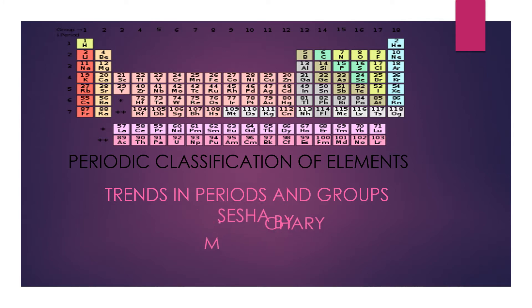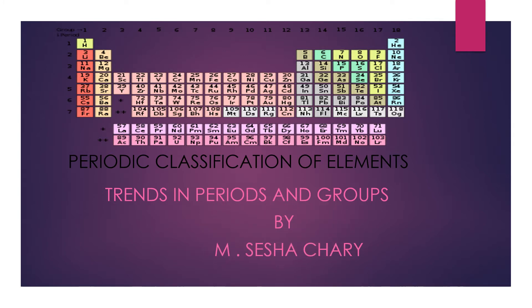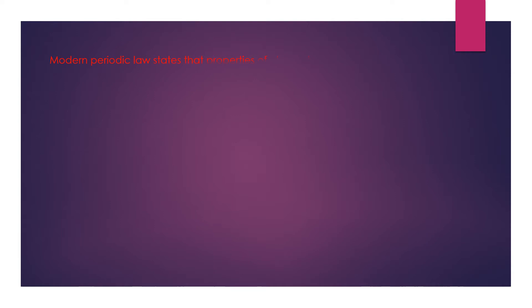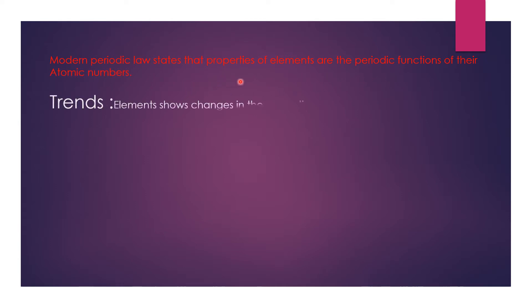Before going deep into the topic, we will recall what we learnt in our previous class. We studied modern periodic law. Modern periodic law states that the properties of elements are the periodic functions of their atomic numbers.